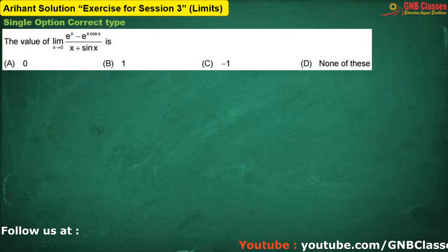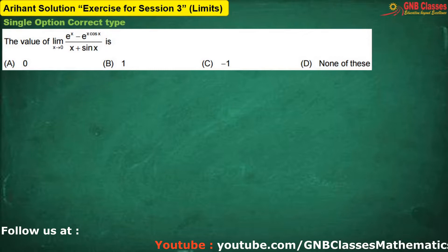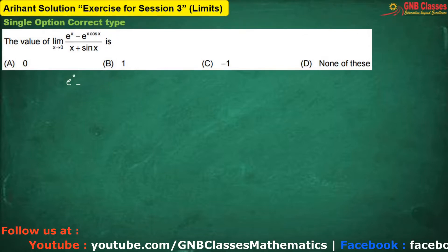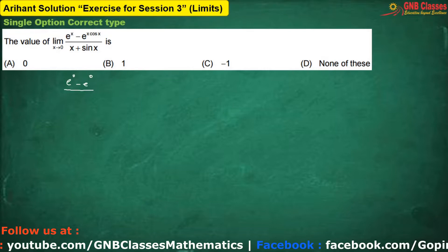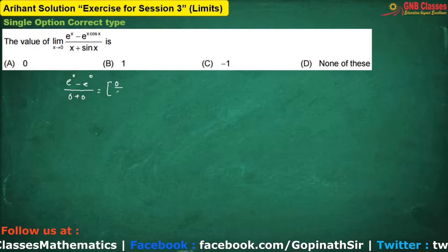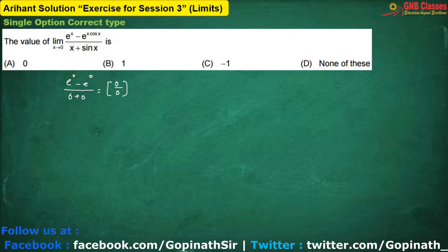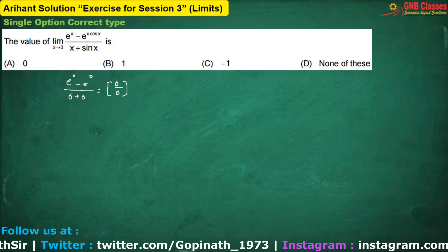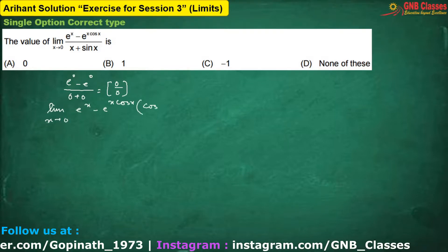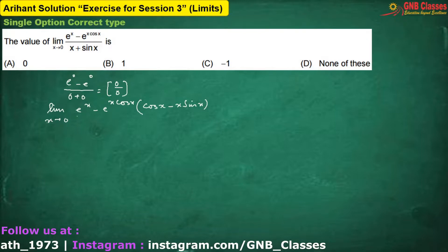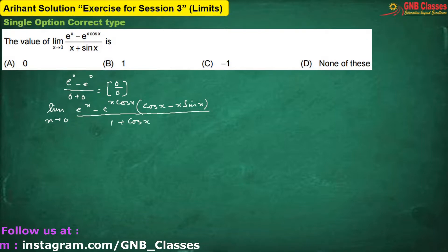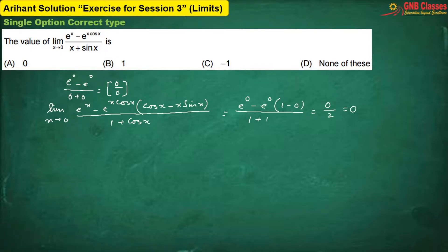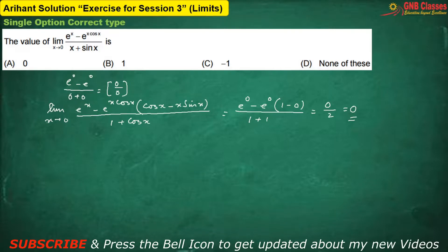In this problem, if I put the limiting value in the given function, we are going to get zero in the numerator and zero in the denominator, so it is basically zero by zero form. So we can apply L'Hôpital's rule, that is differentiating numerator and denominator separately. Now if I put the limit, we are going to get the value of this limit as zero. Hence option A is correct.